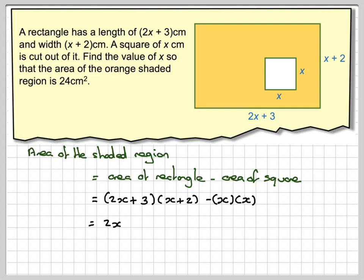Expanding these brackets, so you're going to have 2x times x plus 2 plus 3 times x plus 2 minus x times x, which is minus x squared. So 2x times x gives me 2x squared. 2x times 2 gives me 4x. 3 times x gives me 3x, and then 3 times 2 gives me plus 6. And then we take away x squared.